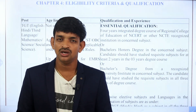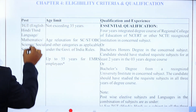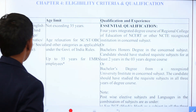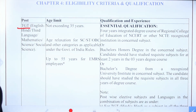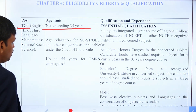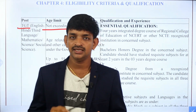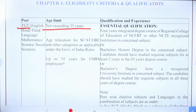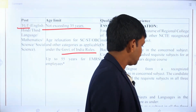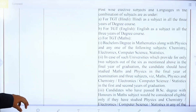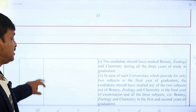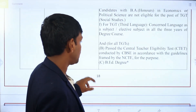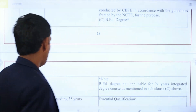Now we have to check the eligibility details. For the TGT — Trained Graduate Teacher post — candidates should have applied up to 35 years of age. For communities like SC, ST, and OBC, Government of India age relaxation rules are applicable. For the TGT post, you should have completed your degree and also completed Bachelor of Education (B.Ed).